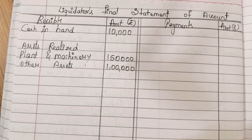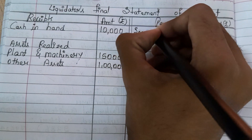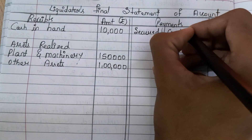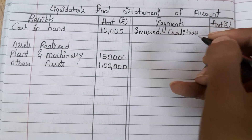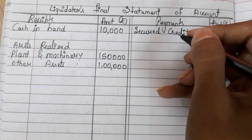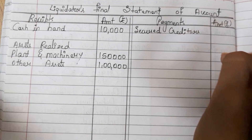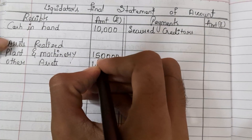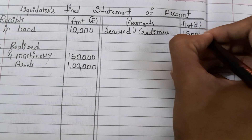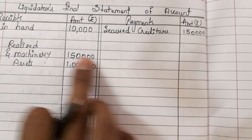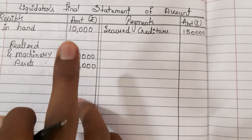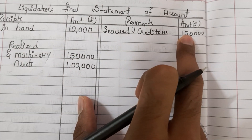So we are having ₹2,60,000 with us. Now first we know we have to pay secured creditors. The secured creditors are secured on plant and machinery to get ₹2 lakh, but the plant and machinery was only realized at ₹1,50,000. So we have to pay them only ₹1,50,000.